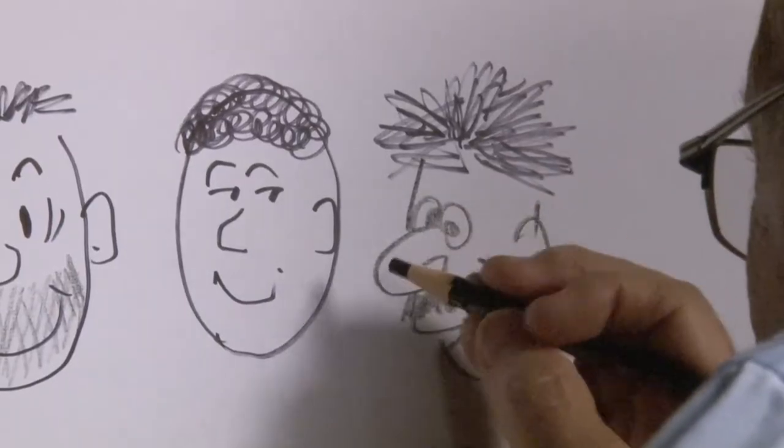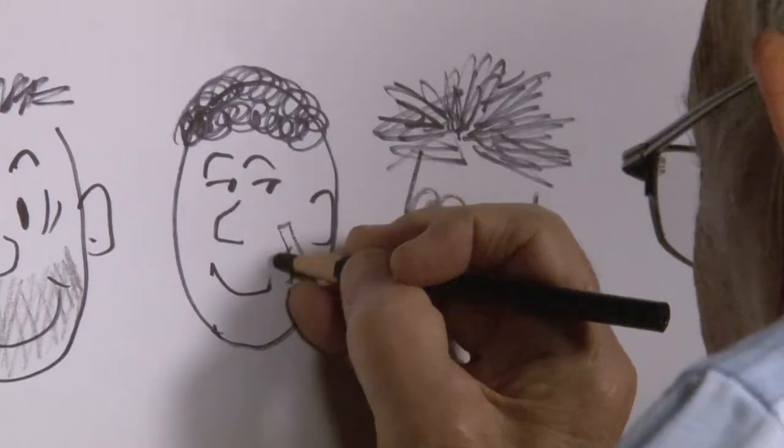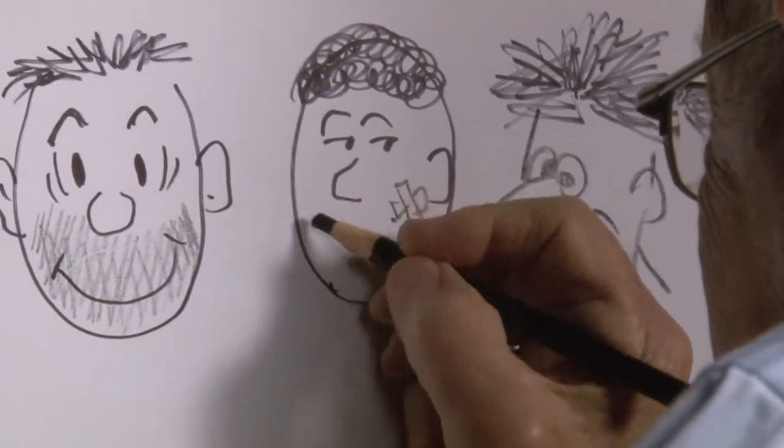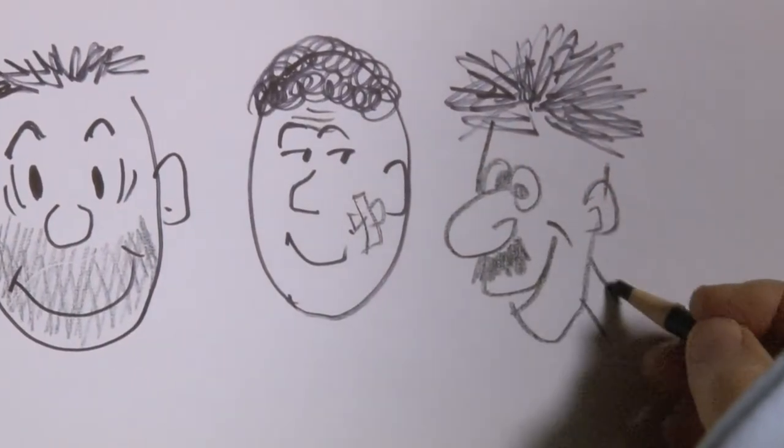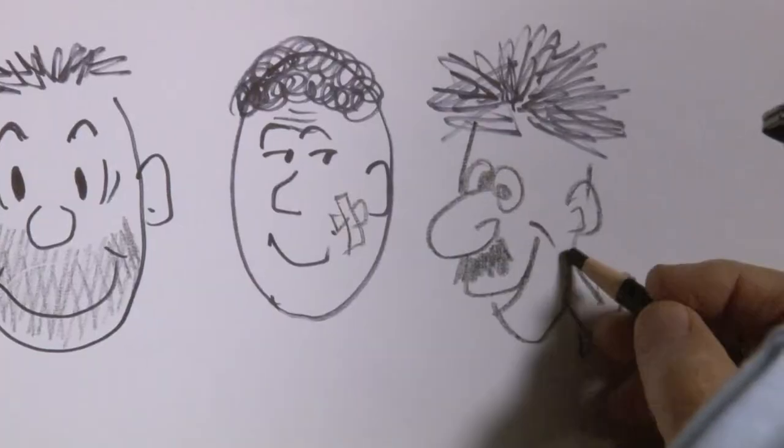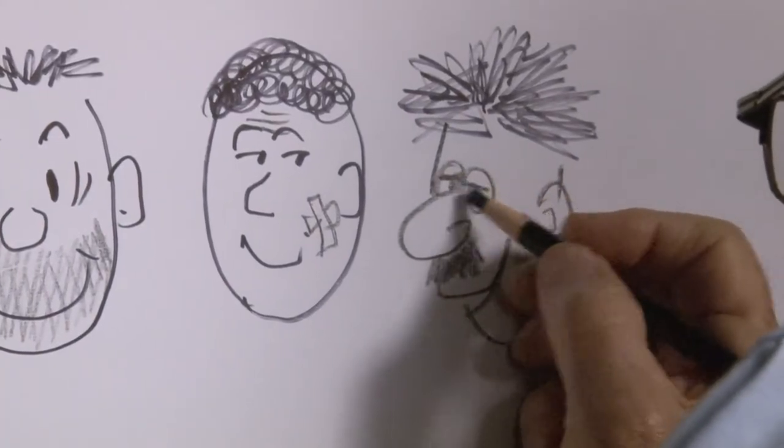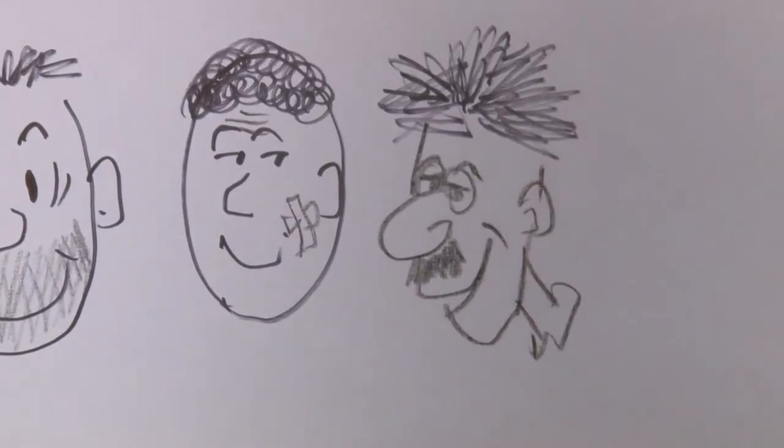And of course, you can do all sorts of things extra, like a bandage or wrinkles, a wrinkled brow. Or eyelids like this, like the first guy I drew a few minutes ago.